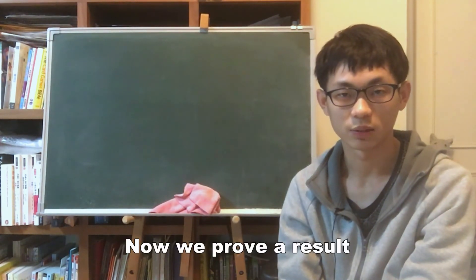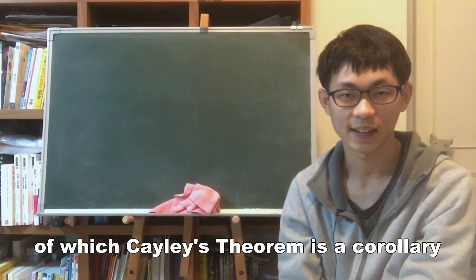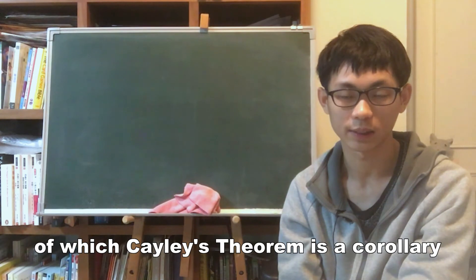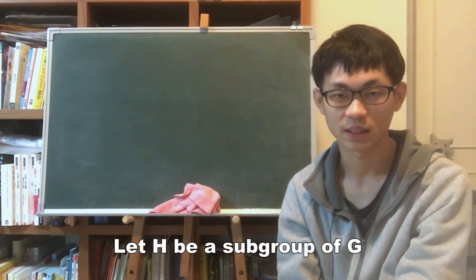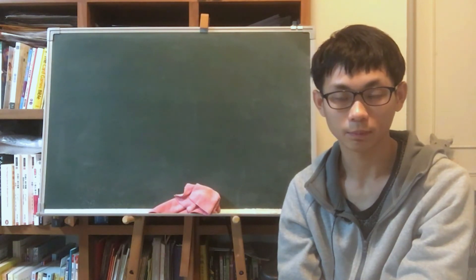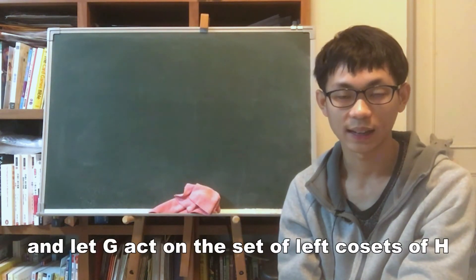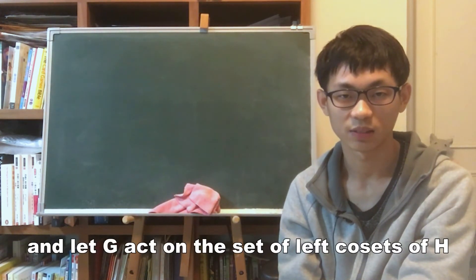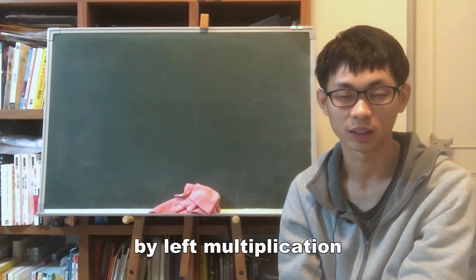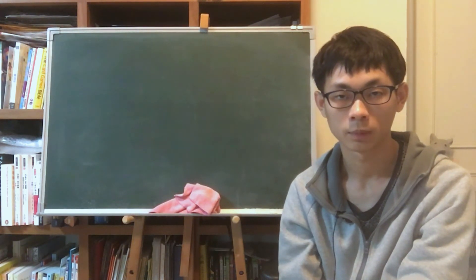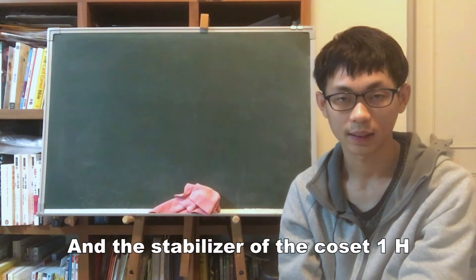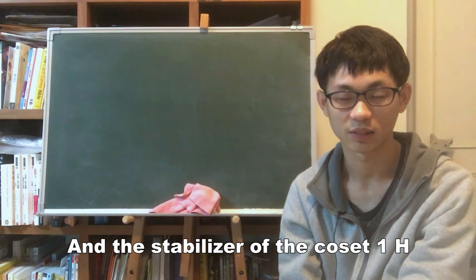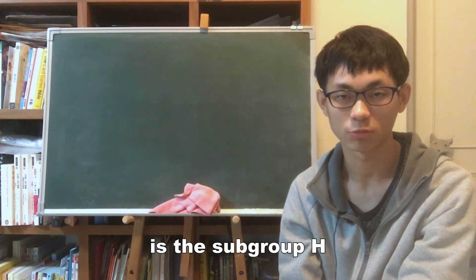Now we prove a result of which Cayley's theorem is a corollary. Let H be a subgroup of G, and let G act on the set of left cosets of H by left multiplication. We show that this action is transitive and that the stabilizer of the coset 1H is the subgroup H.